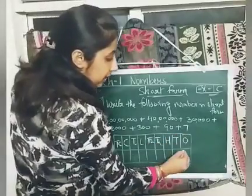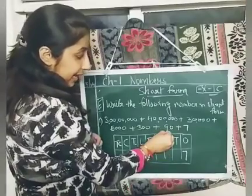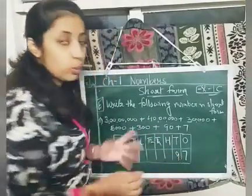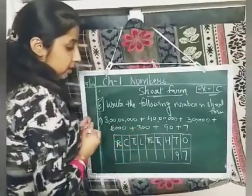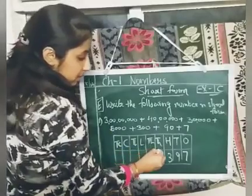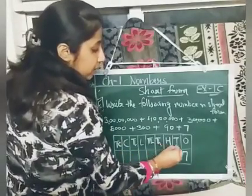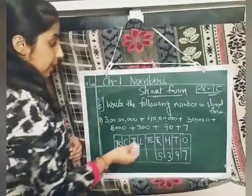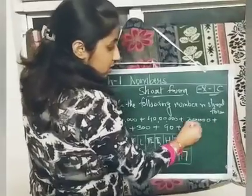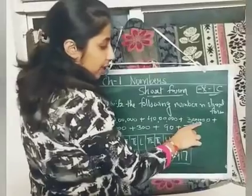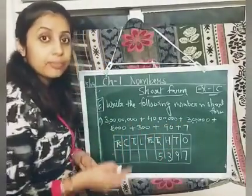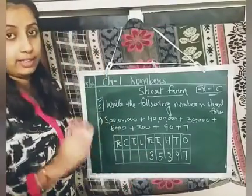After writing their places, you will look at the expanded form in the question. I am starting from the left hand side — it will be easier. First is 7; 7 will come at ones place. Then 90 — 90 means 9 and one zero; one zero comes at tens place, so I will write only 9 because the zero will not be counted. Now 300: 3 will come at hundreds place. Now 5,000 — 5 and 3 zeros, so 5 will come at thousands place. Then 30,000 — four zeros, so 30,000 means 3 will come at ten thousands place; I will not write the zero.